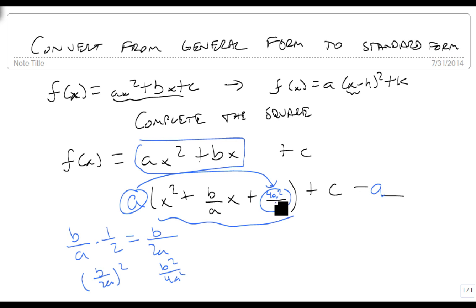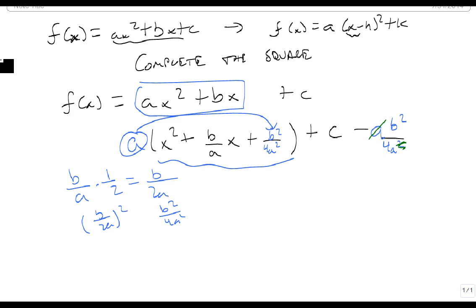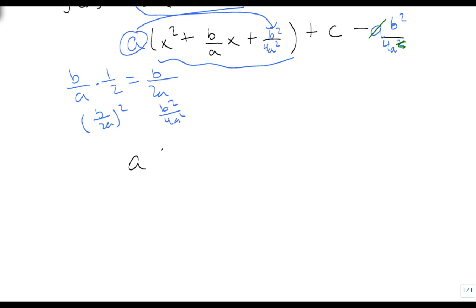So 4a²—nope, that goes on bottom. So this becomes a fraction bar. We get a b² on top and a 4a² on bottom. And we're going to get a b² on top and a 4a² on bottom. And so we're going to get a times, this now factors as (x + b/2a)². That's what our completing the square does.